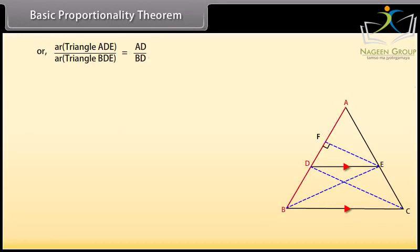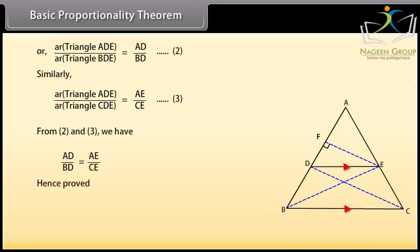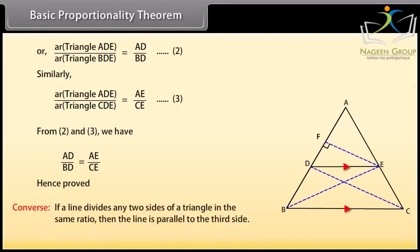Area of triangle ADE upon area of triangle BDE equals AD upon BD — mark it as equation 2. Similarly, area of triangle ADE upon area of triangle CDE equals AE upon CE — mark it as equation 3. From equations 2 and 3, AD upon BD equals AE upon EC. Hence proved. The converse of this theorem is also true: if a line divides any two sides of a triangle in the same ratio, then the line is parallel to the third side.